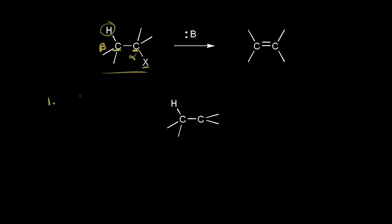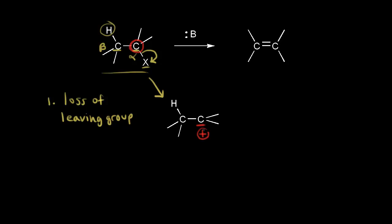The first step of an E1 elimination mechanism is loss of our leaving group. The electrons come off onto the leaving group in the first step. So we're taking a bond away from this carbon — the one circled in red — meaning that carbon goes from being sp3 hybridized to sp2 hybridized. Now we have a carbocation. Carbocations, sp2 hybridized carbons, have planar geometry around them. That's the first step: loss of the leaving group to form a carbocation.